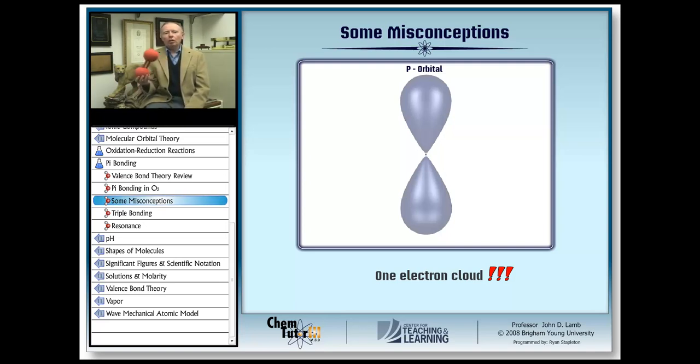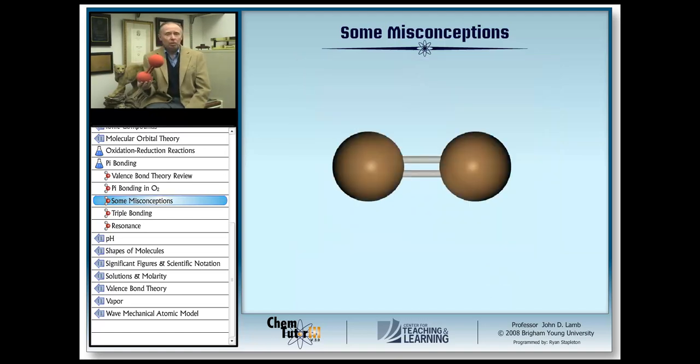So you see how a model like this one could result in some misconceptions? It doesn't represent the two lobes of the pi bond. It represents the two bonds, one a sigma bond, and the other a pi bond, the latter of which consists of two lobes, one above and one below the plane of the bond axis.